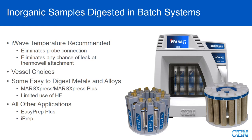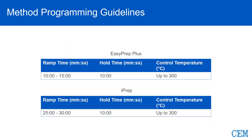For all other applications, we recommend using either the EasyPrep Plus or the I-Prep vessel — a newer vessel that can go to very high pressures, typically used for organics but usable for inorganics as well. For the EasyPrep Plus, we recommend a ramp time of 10 to 15 minutes, a hold time of 10 minutes, up to 300°C. Because the I-Prep can go to such high pressures, we require a 25 to 30-minute ramp for safety, with the same 10-minute hold, again up to 300°C.